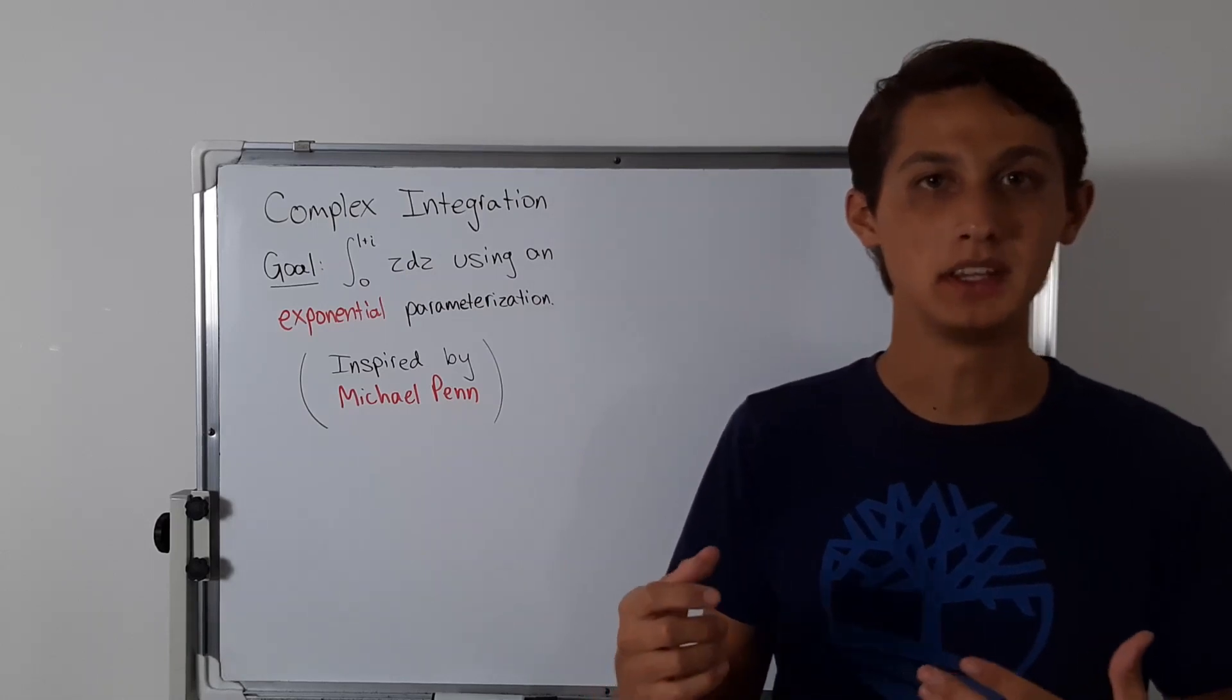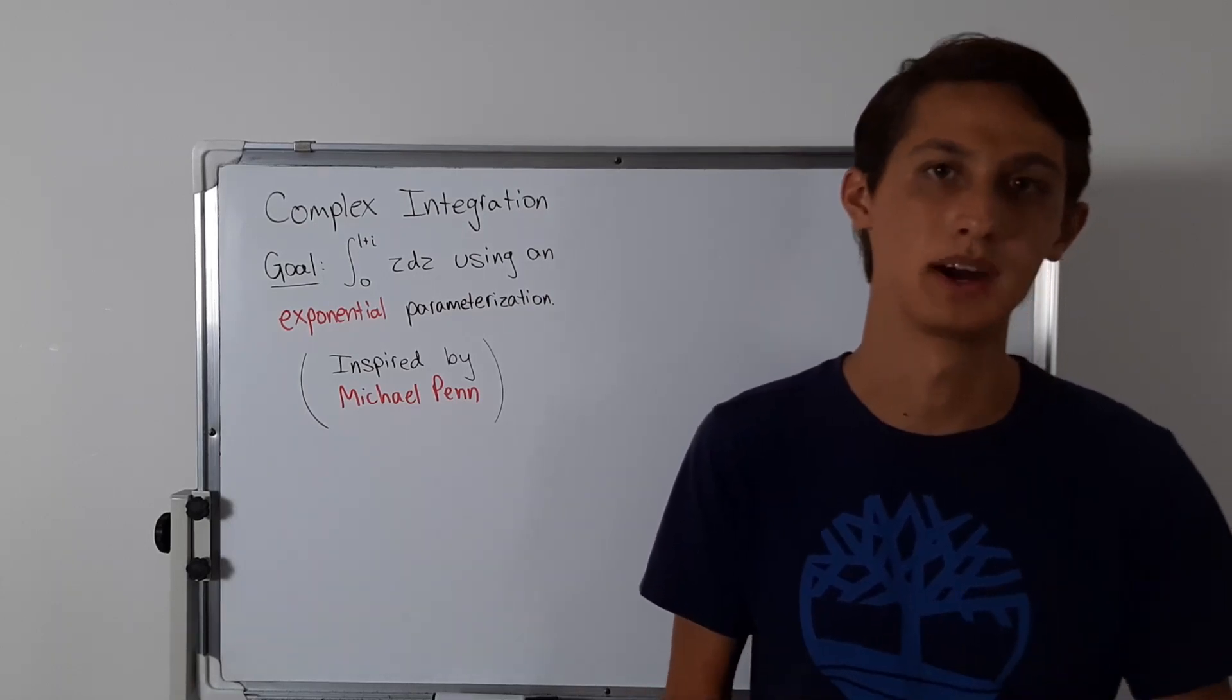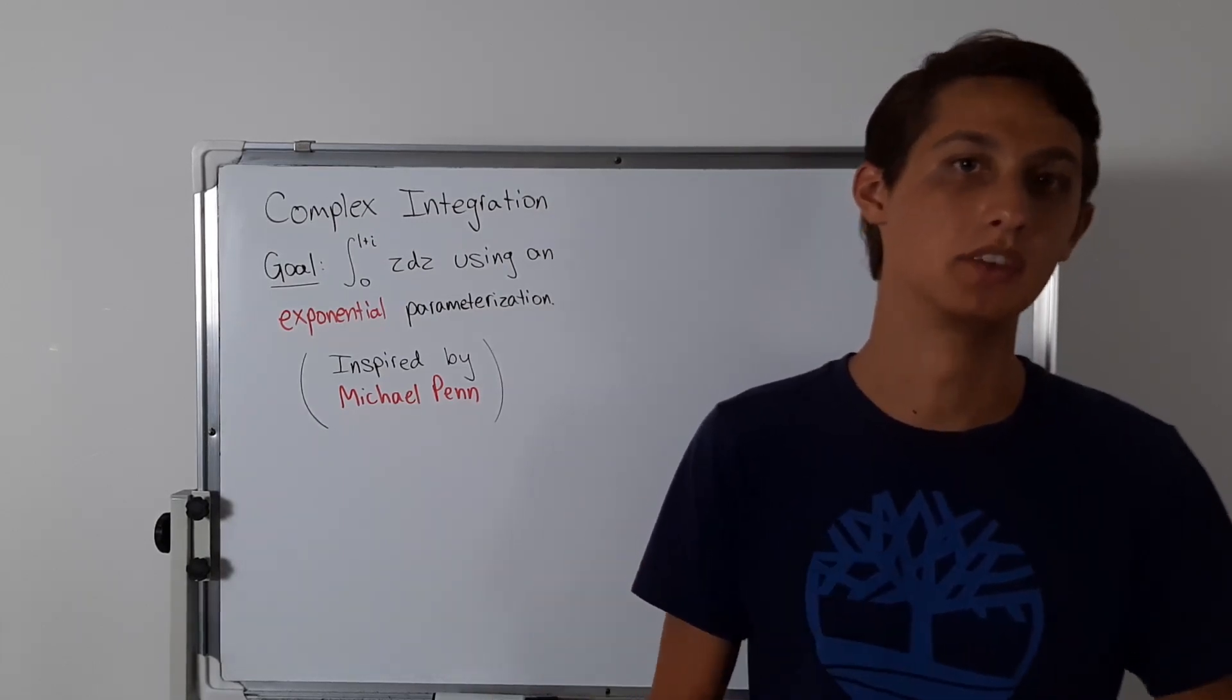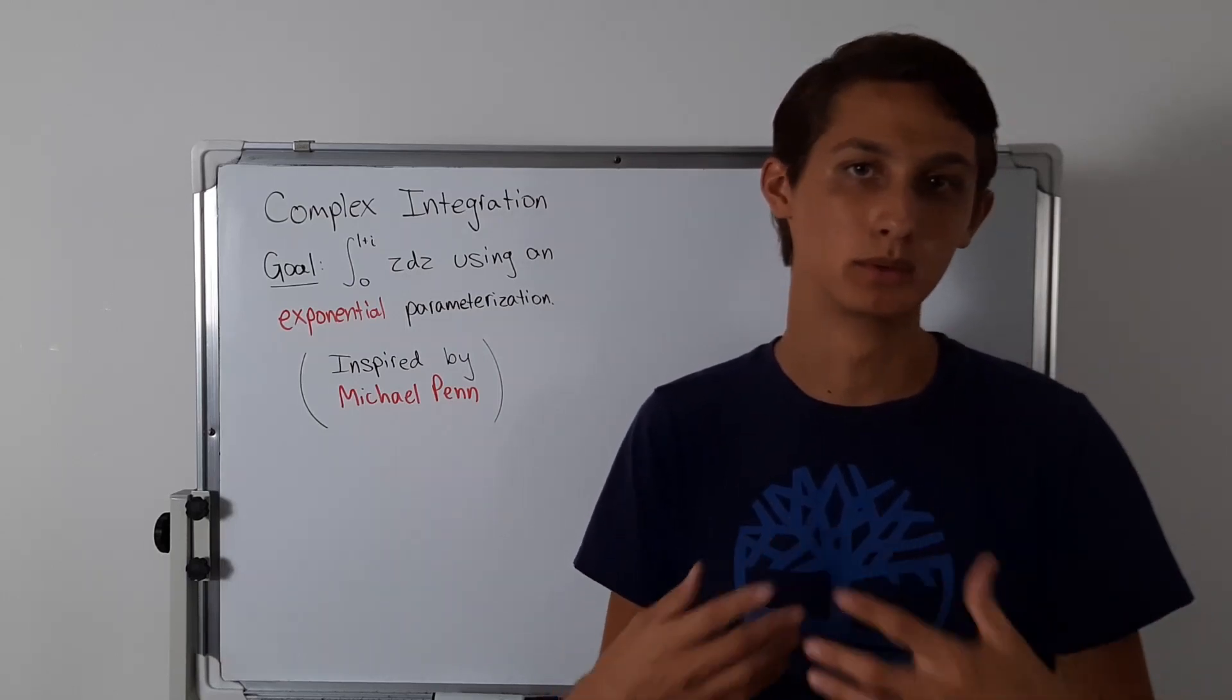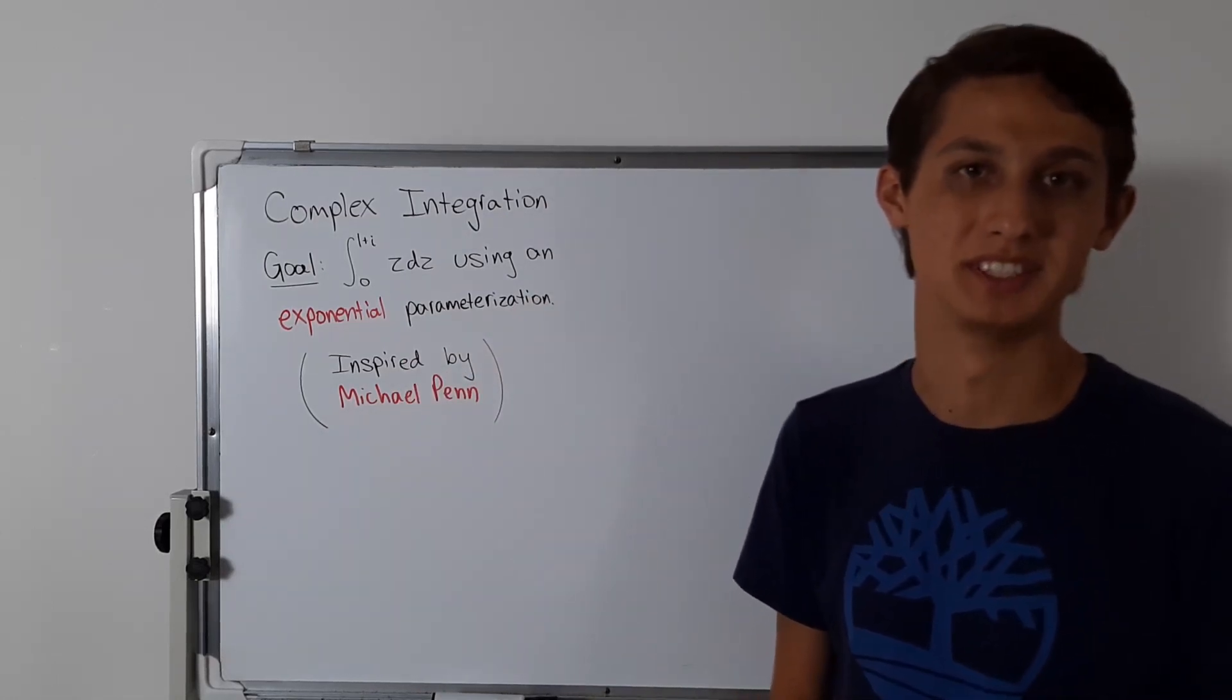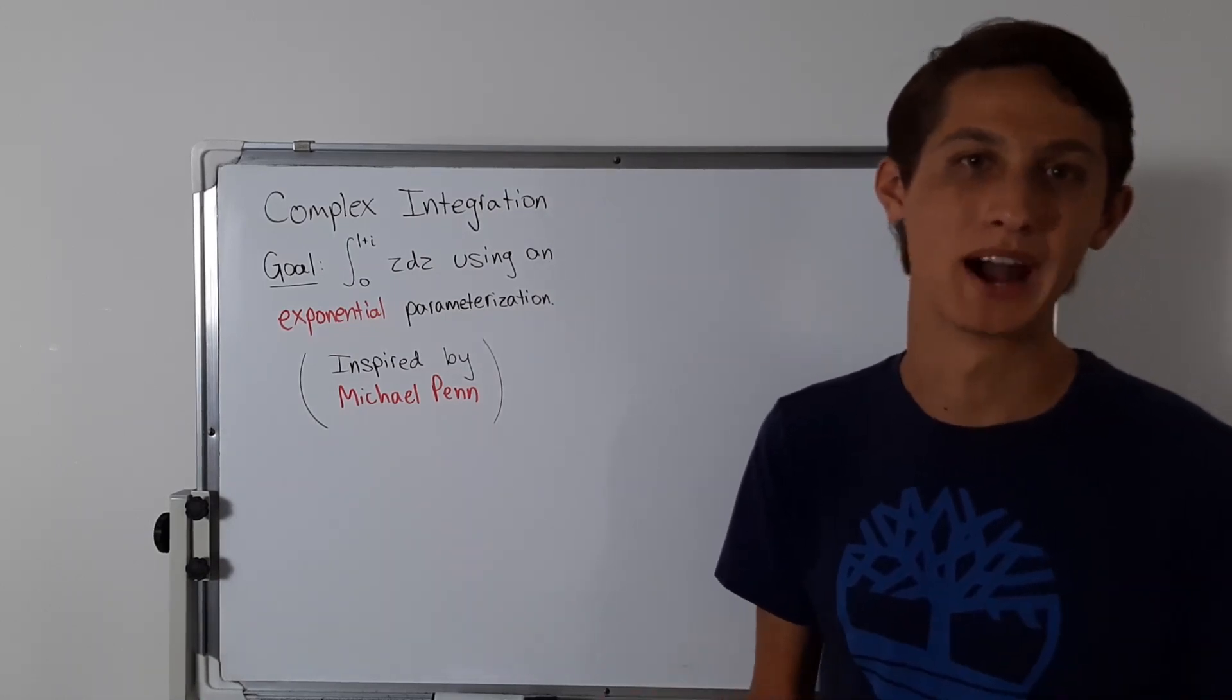He showed a couple of examples of different paths, like piecewise dependent paths, and proved that any path will give you the same result. So what I wanted to do was try some really wacky parameterization. What about an exponential parameterization, instead of some linear piecewise one?